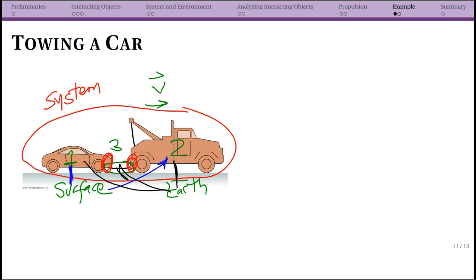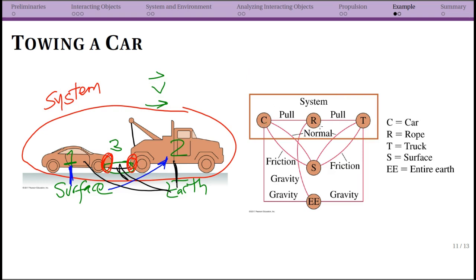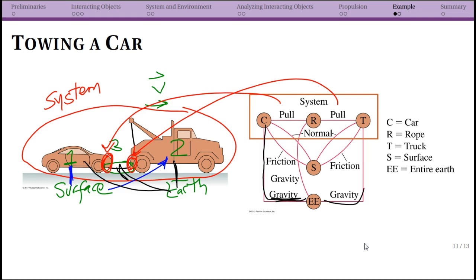So we've identified our forces. In the interaction diagram we have three objects: car, rope, and truck. We have two pairs of forces — pulling forces where the rope pulls on the truck and the truck pulls on the rope — and surface forces between the car and surface, and the surface and the truck. The rope also has an interaction with gravity. Note that the outer line here represents gravity, not just a decorative box.